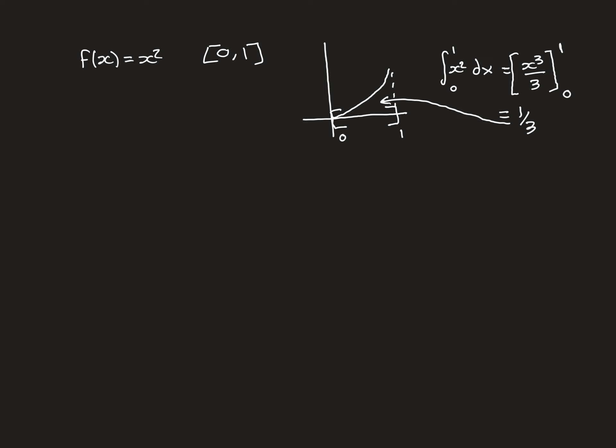The dissection we're going to choose is an even dissection, where we chop the interval up into equal-sized pieces, and we'll chop it up into progressively more and more pieces, calling the number of pieces n. Our interval [0, 1] is going to be chopped up into n equal-sized pieces. So if n equals 1, it's just the entire interval; n equals 2, 3, 4, would progressively subdivide it further. We'll consider what the upper and lower Riemann sums over these dissections equal.